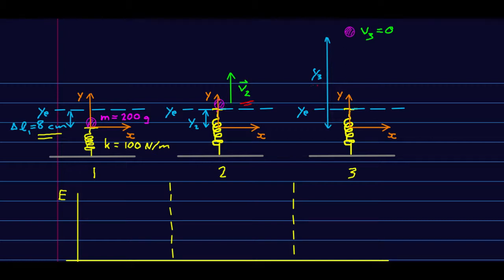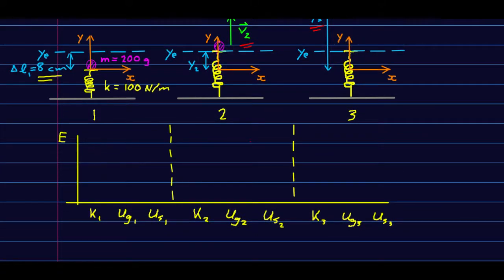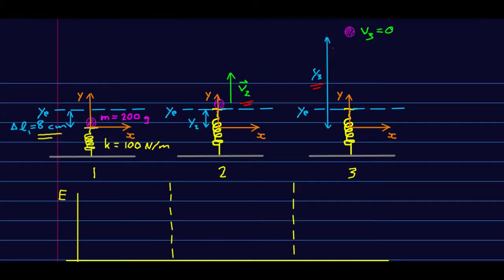We can also find how high the ball goes if it comes to rest at maximum height. I'm going to start with energy bar charts. You should think of energy bar charts as being just like the energy method equivalent of a free body diagram — you always start with a free body diagram when working with forces. When using energy methods, you should always start with an energy bar chart to organize your thoughts. I've set it up with spots for each type of energy: kinetic energy, gravitational potential energy, and spring potential energy.